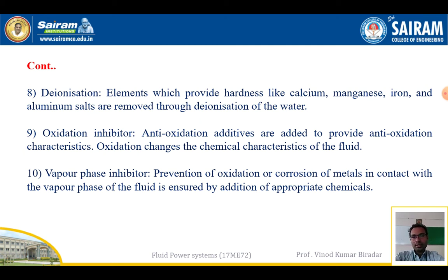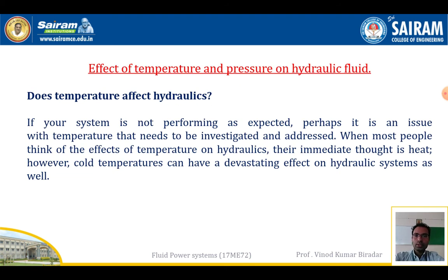The ninth type is an oxidation inhibitor. Anti-oxidation additives are added to provide anti-oxidation characteristics, since oxidation changes the chemical characteristics of the fluid. The tenth type is a vapor phase inhibitor, which prevents oxidation or corrosion of metal in contact with vapor phases of the liquid through addition of the appropriate chemical. In summary, additives are substances added to another substance to improve some property, characteristic, or color.